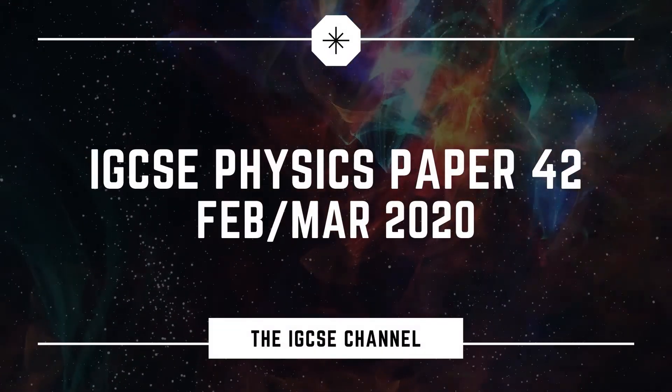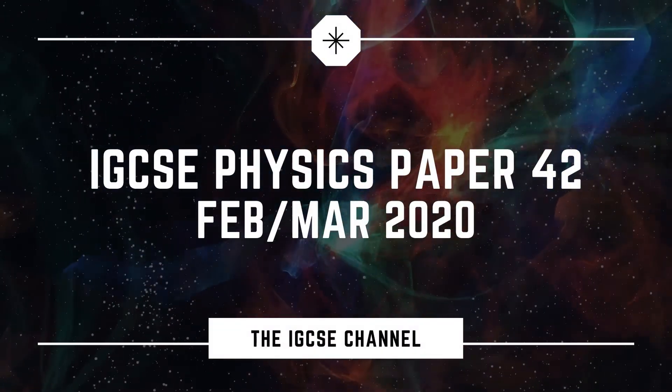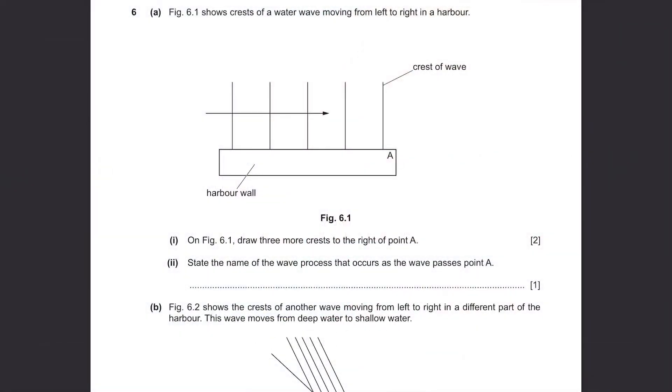Cambridge IGCSE Physics February March 2020 Paper 42 Part 2. Question 6 Part A. Figure 6.1 shows crests of a water wave moving from left to right in the harbour. On Figure 6.1, draw three more crests to the right of point A. What would happen if the wave travels beyond this wall? One thing for sure, the wavelength will stay the same and the crests should still be parallel. However, the crests will be curved a bit at the bottom like this. State the name of the wave process that occurs as the wave passes point A. This is called diffraction.